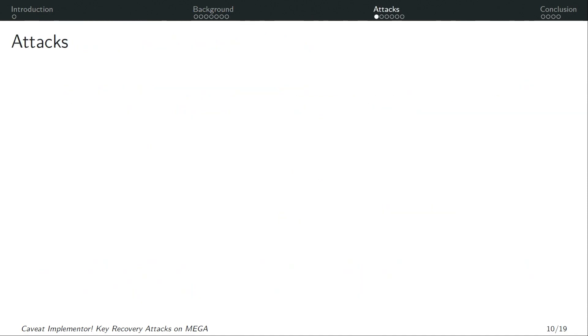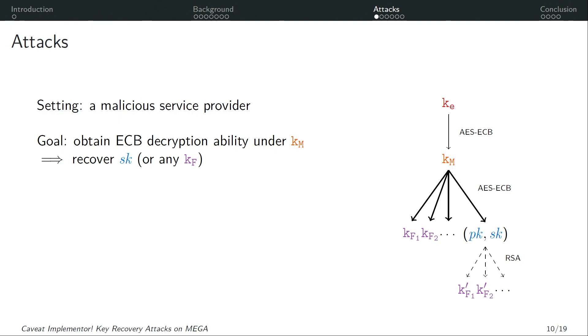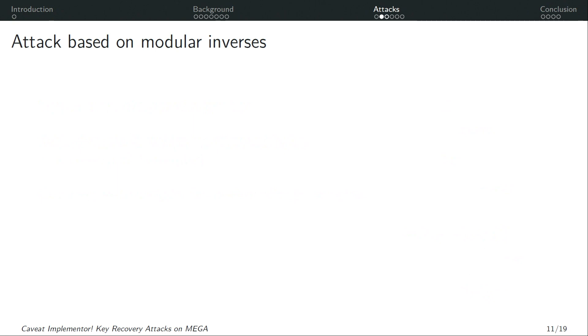So in a very simplified form you can see how a malicious server can use this to construct an ECB encryption oracle by essentially pretending to upload a file to the target user's cloud storage and it chooses some key material and the user's client automatically re-encrypts this key material under their own master key and then stores it back on the server. So as I said a malicious provider can use this to construct an ECB encryption oracle without user interaction and without actually leaving traces on the user's client. Now I will describe the attacks. So as I said we are in the setting of a malicious service provider which is the one that MEGA claims your files should be secure under and our goal as an attacker is to obtain ECB decryption ability under this master key.